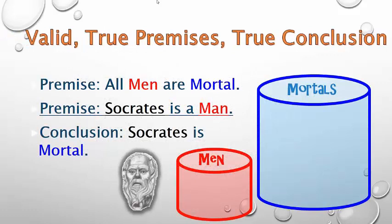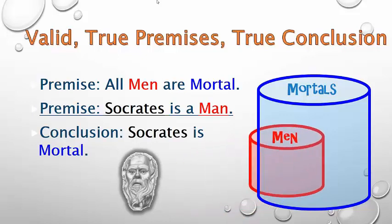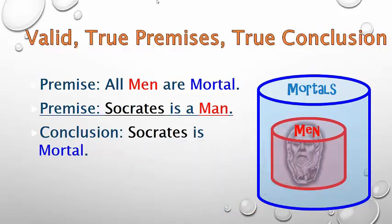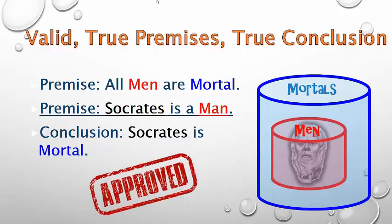Here's a valid argument that has true premises and a true conclusion. That's a nice case. If all men are mortal, as the first premise claims, and Socrates is a man, as the second premise claims, then Socrates is indeed mortal. But validity does not require true premises and a true conclusion, even though this structure is a very good one.